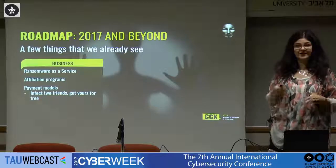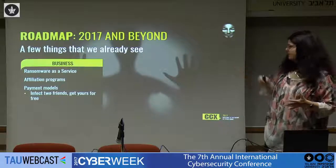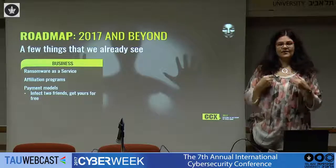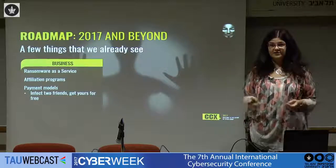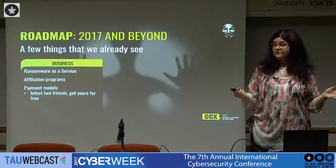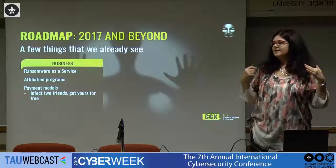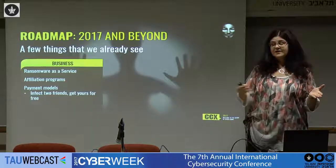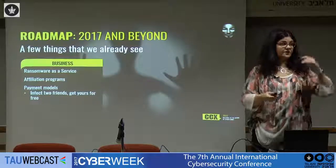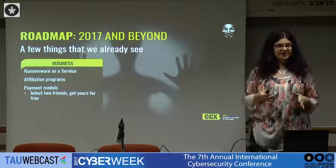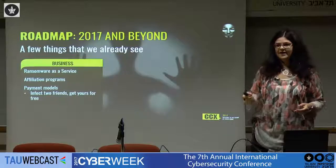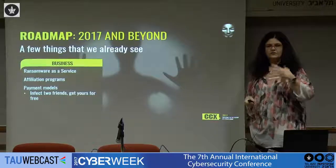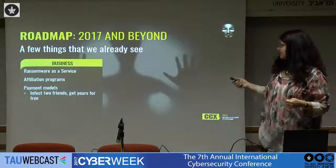There's also a payment model we've encountered — cruel but clever: infect two of your friends, get yours for free. If you get infected by ransomware, you receive an offer: either pay $500 in Bitcoin or infect two of your friends and get your decryption keys for free. If you go and infect two friends, they receive an email from someone they know, so the chances they'll open the attachment are much higher than if it came from a stranger. That's the thinking behind getting more traction and infecting more people.